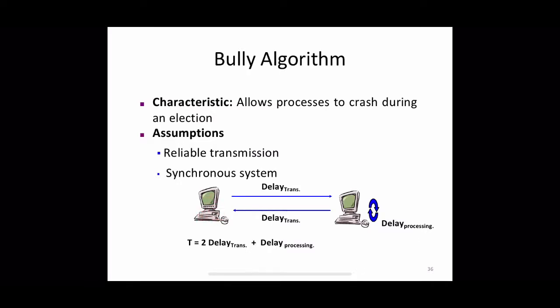Consider a sender process and a receiver process. When the sender sends a message, there is a maximum message transmission delay, delay_trans, to reach the destination, plus a delay_processing time at the receiver to process the message, and another delay_trans to send back the response. So totally 2*delay_trans + delay_processing can be set as an upper bound on the time that can elapse between sending a message and receiving a response. If no response arrives within this time period T, the local failure detector reports that the intended recipient has failed.